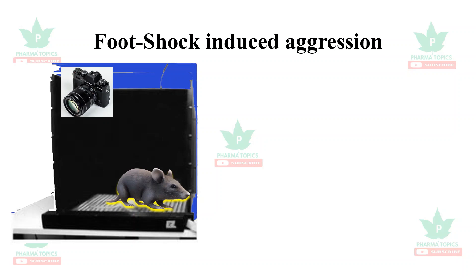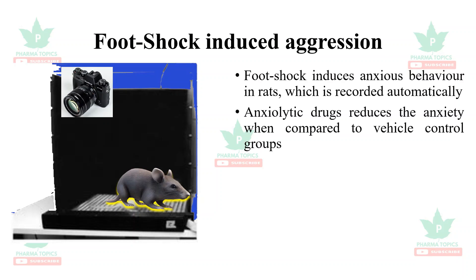The foot shock-induced aggression model uses an apparatus where a mild shock is induced through a grid floor. When the grid is switched on, the animal receives a shock to the foot. Foot shock induces anxious behavior in rats, which is recorded automatically, and anxiolytic drugs reduce anxiety compared to vehicle control groups.